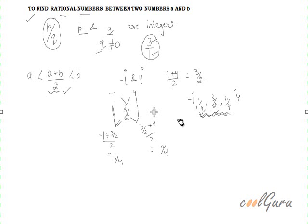But suppose we have to find say 100 rational numbers between minus 1 and 4. So this procedure becomes a bit lengthy. So we will use another method for such sums.